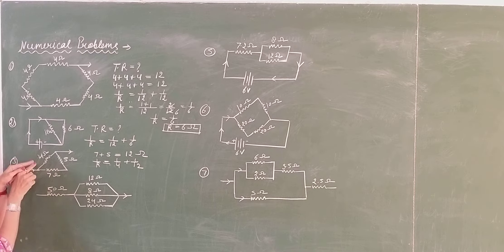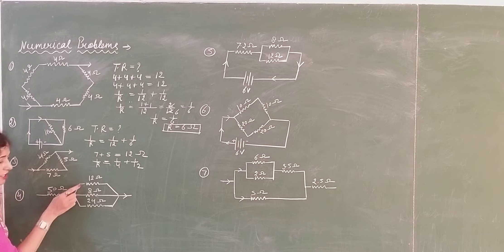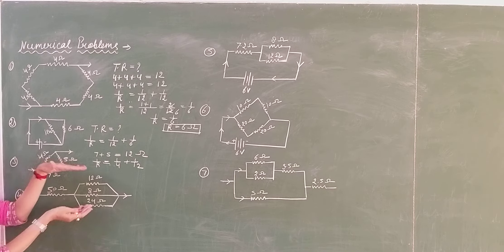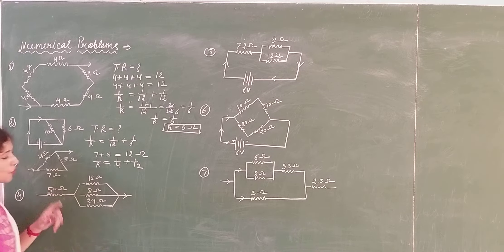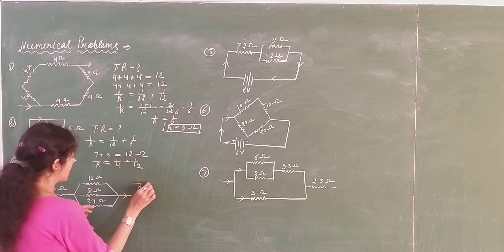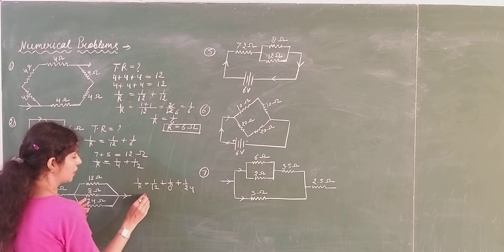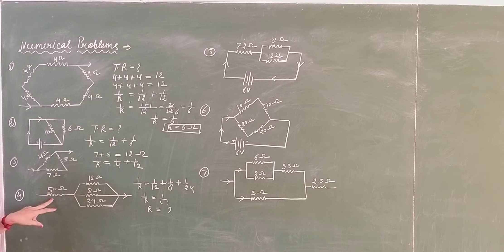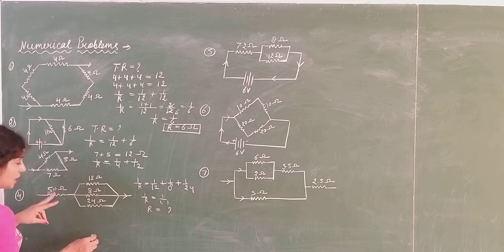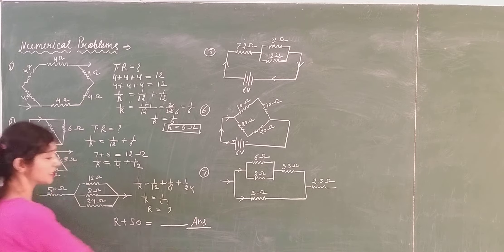And it is connected with this 4 ohm in a parallel combination. The current coming from this side is divided into 3 portions, so these 3 resistors become parallel to each other. Their resultant from the parallel combination then links in series with this 5 ohm. So what you have to do: first calculate 1 over R equals 1 over 12 plus 1 over 8 plus 1 over 24. Whatever value of R you get, connect it in series with 5 ohm to get the final resultant resistance.